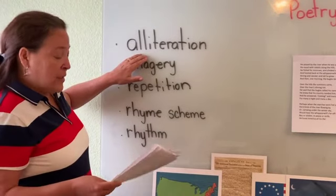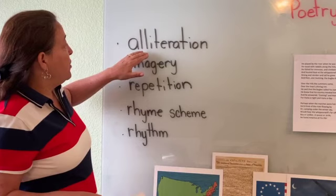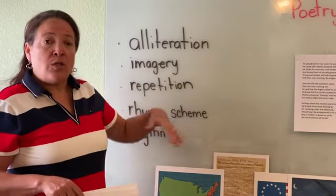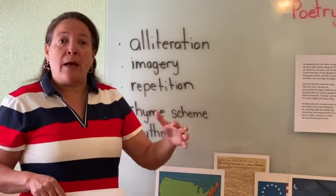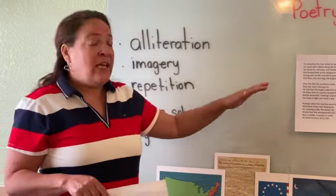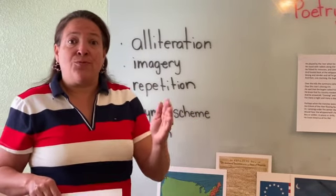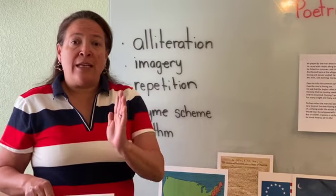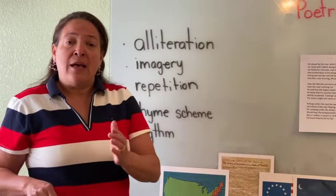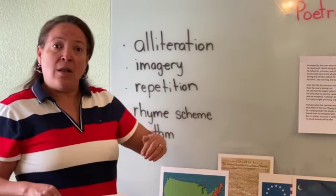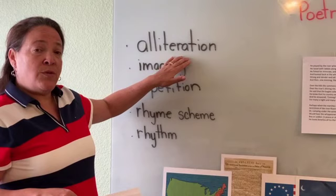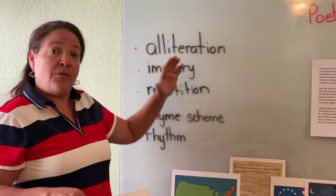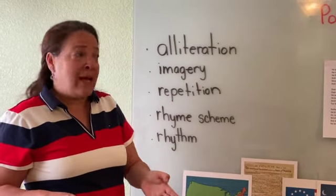So the first one is alliteration. Alliteration is the repetition of repeated sounds. So in the poem you're going to hear a sentence: he raced with rabbits. Raced. Rabbits. That initial consonant sound — that is what we call alliteration. Poets use alliteration a lot where they use the first sound and they repeat the first sound.